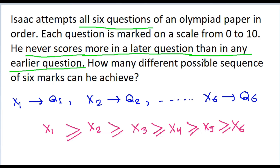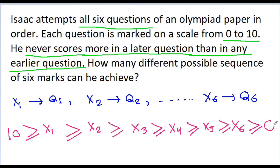There is one more constraint: each question is marked on a scale from 0 to 10, meaning X1 is less than or equal to 10 and X6 is greater than or equal to 0. We have to find how many different sequences of six marks — X1, X2, X3, X4, X5, and X6 — he can achieve.